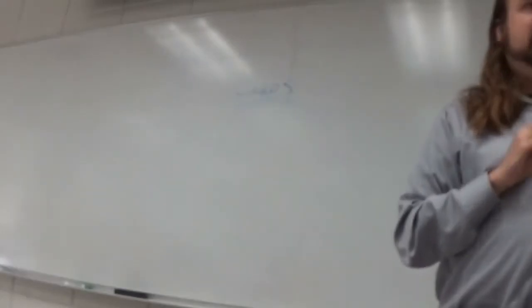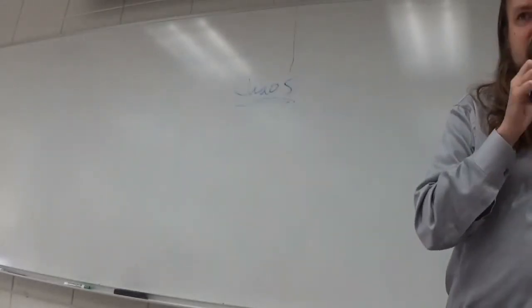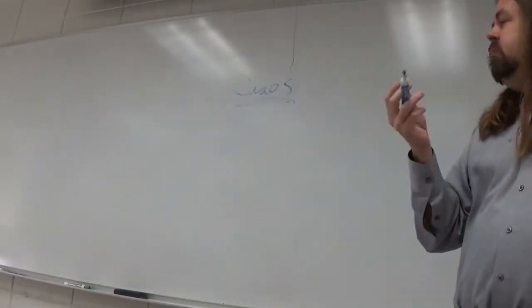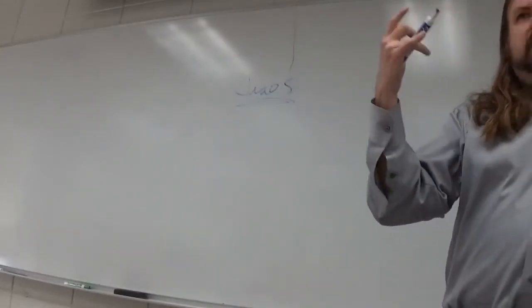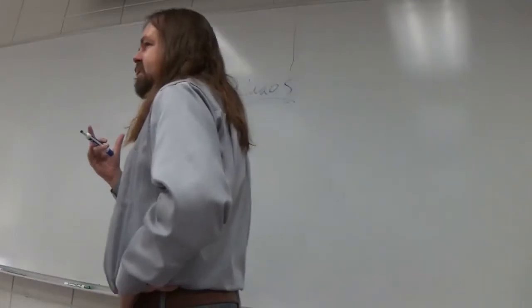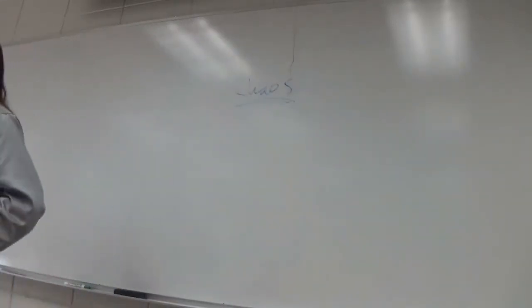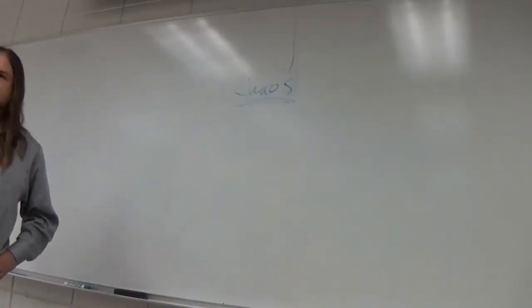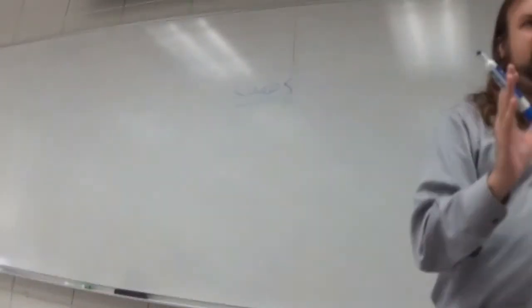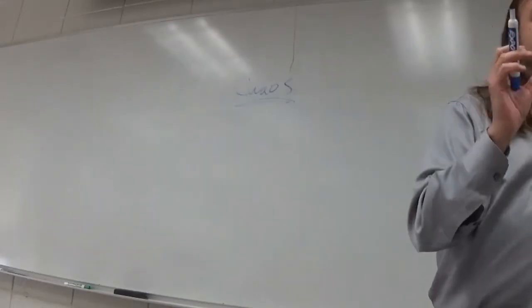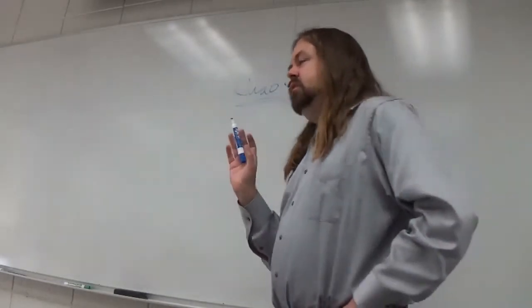So if everything is ultimately made out of chaos, what does that mean about everything in the world? That's how it starts. Okay, yeah, we start with chaos. We start with change, right? And because we're made out of chaos, everything in this room, according to Ovid, is made out of chaos. It's inherently unstable. Everything can lose its form.